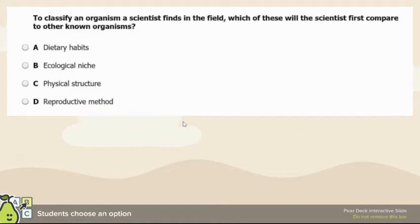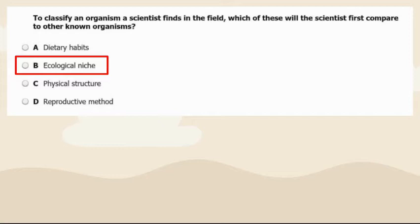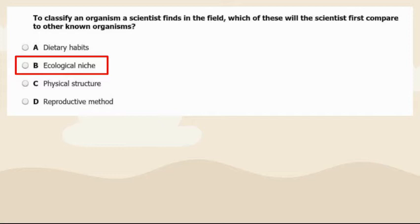When looking at a new species, you want to look at its ecological niche — the role that the species has in its ecosystem. This encompasses what it eats, who it mates with, how it survives in this environment, and how it interacts with other species, populations, and things in the environment.